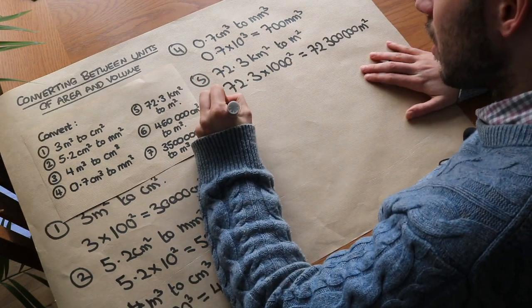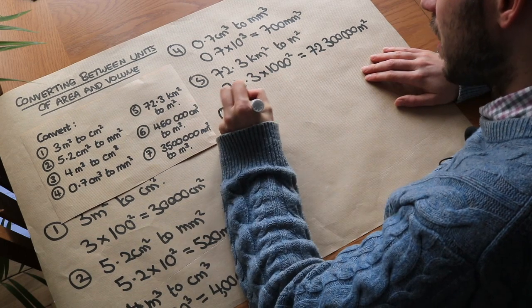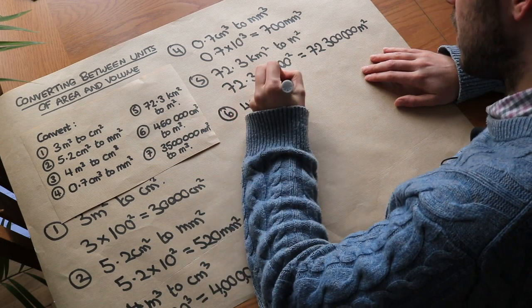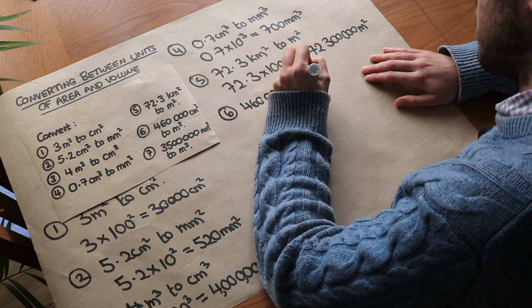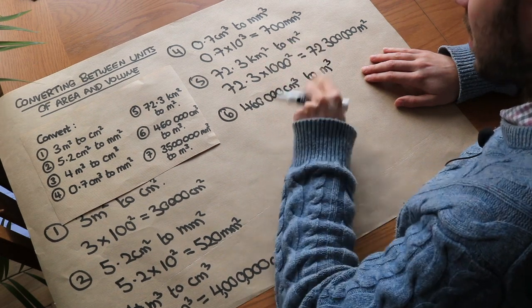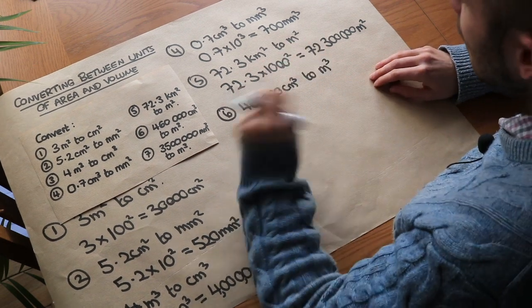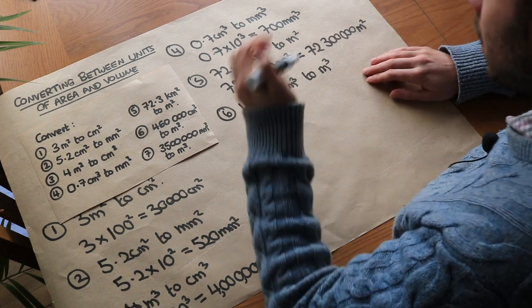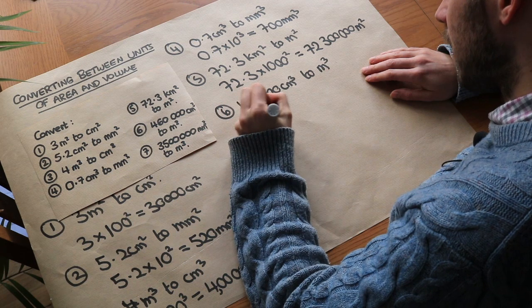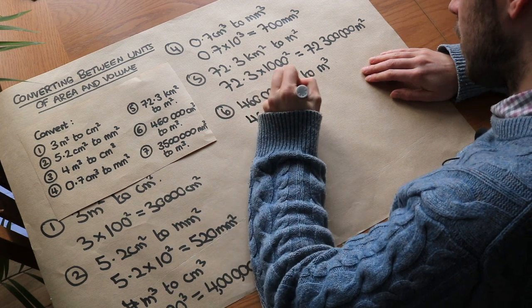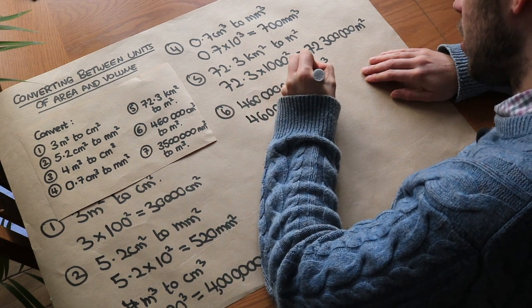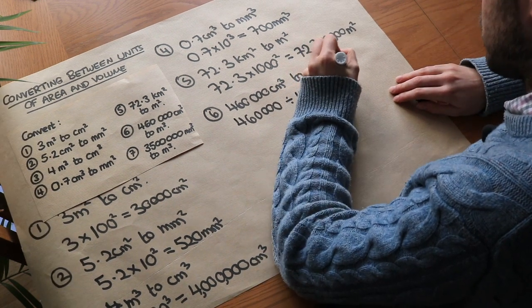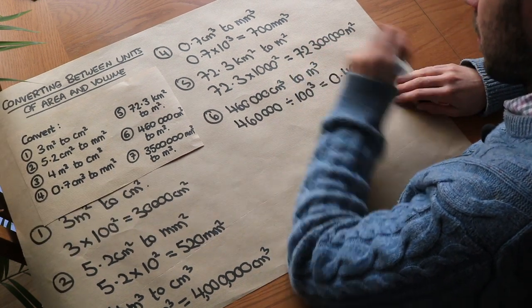Question 6: we've got four hundred and sixty thousand centimetres cubed and we want to convert it to metres cubed. To get from centimetres to metres we divide by a hundred, so we're therefore going to divide by a hundred cubed. So it's four hundred and sixty thousand divided by a hundred cubed, and that gives us 0.46 metres cubed.